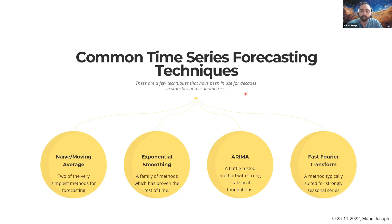Then we have another method called ARIMA, which is autoregressive integrated moving average. It's another battle-tested method with very strong statistical foundations, and it's also a very good alternative worth considering today.